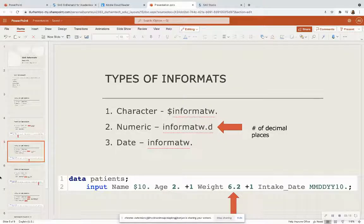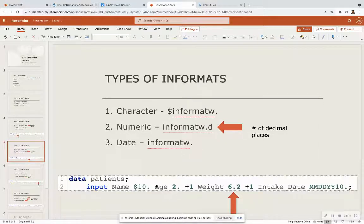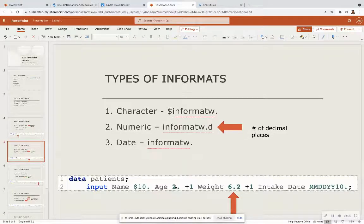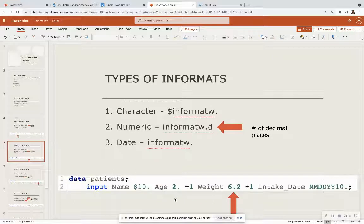If I look at the age, notice that I do not have any numbers after age, right? Normally, we don't say we're 57.20 years old. So age is just a regular numeric informat, which is 2. It's telling me that my age is two width, and it has the trailing dot so that it recognizes that it's an informat.